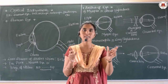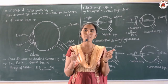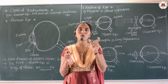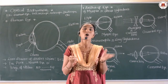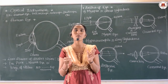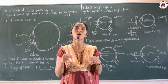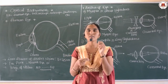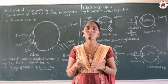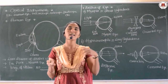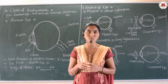Optical instruments are devices which give detailed information and study of an object with the help of light, or with the help of phenomena such as refraction or reflection of light. In optical instruments, we use mirrors, lenses, and sometimes prisms also.